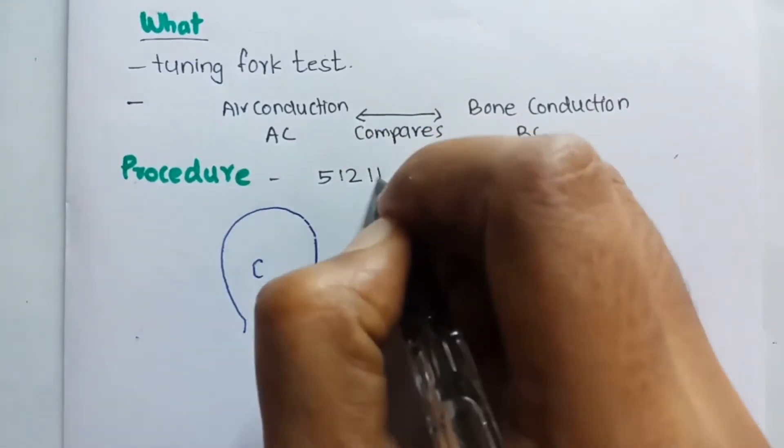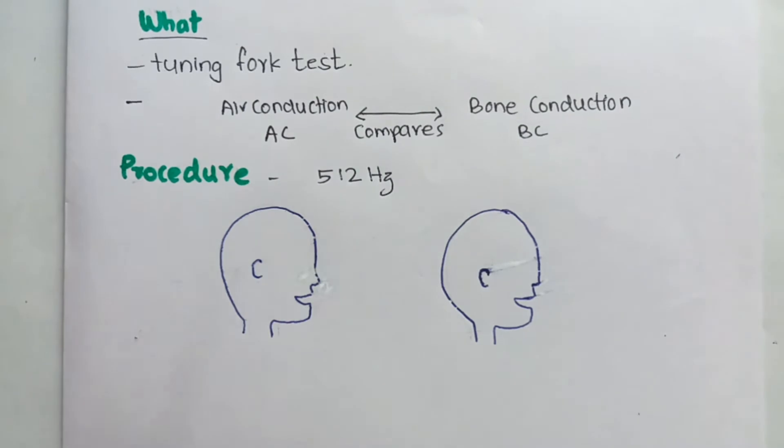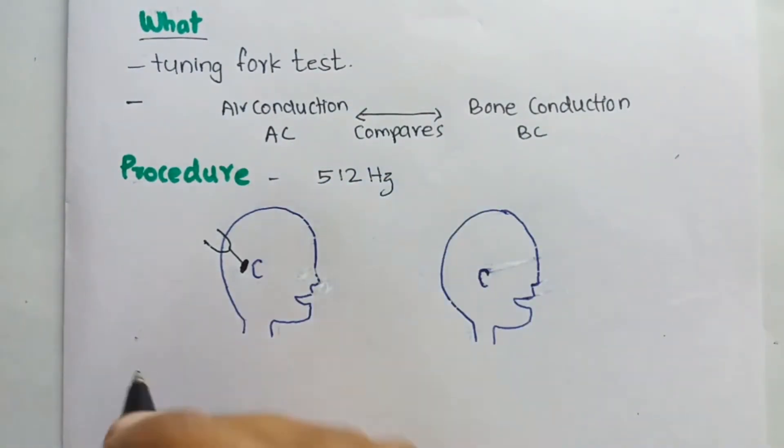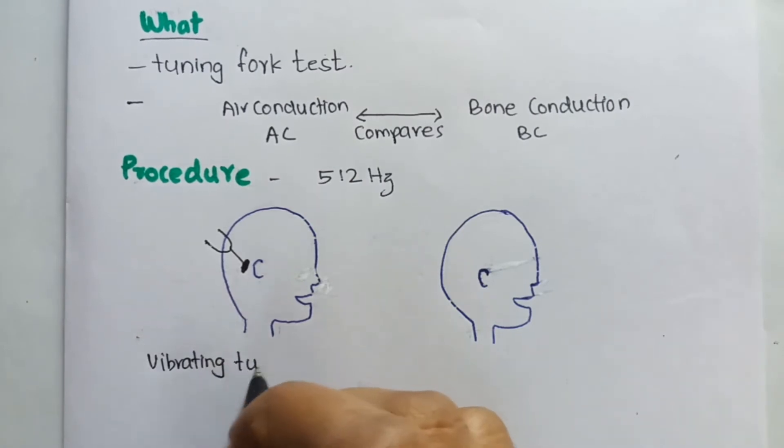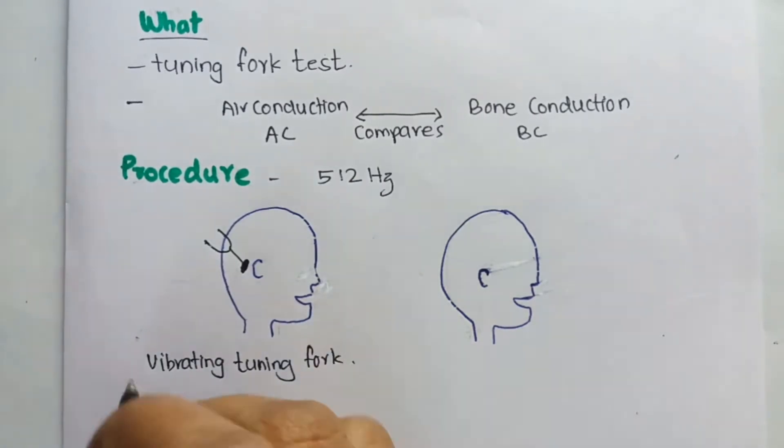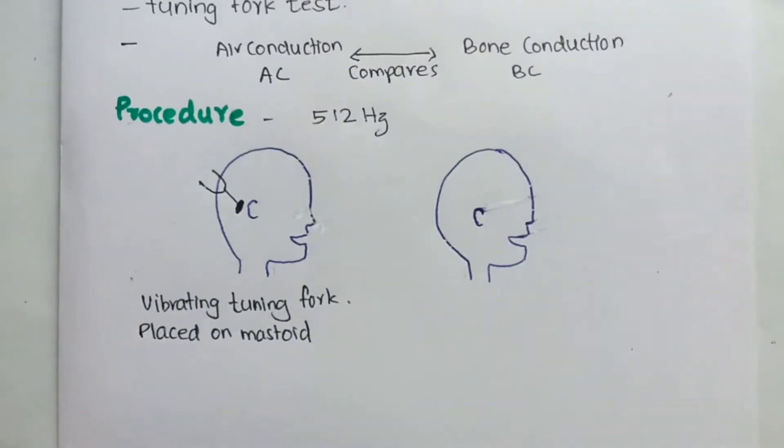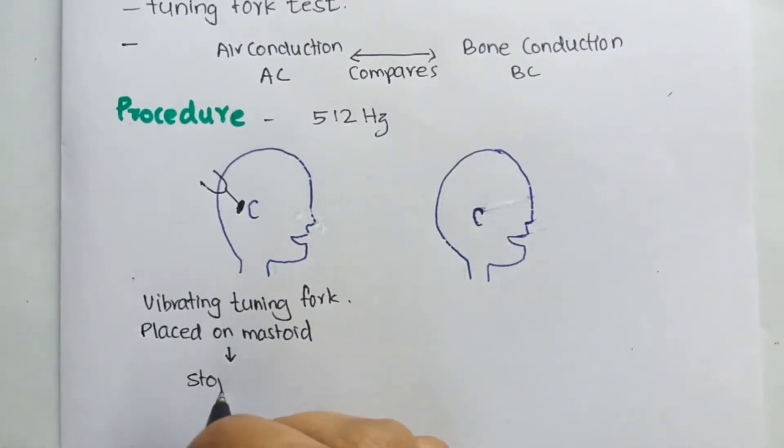How is it performed? Usually we take a 512 hertz tuning fork and first place it over the mastoid process. The vibrating tuning fork is placed over the mastoid and the patient is asked to indicate when the sound stops.